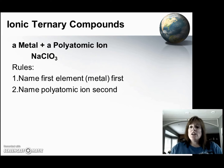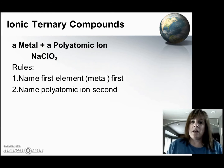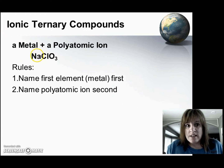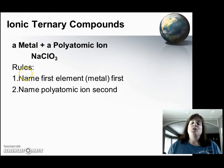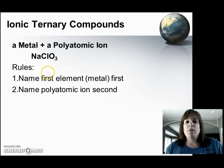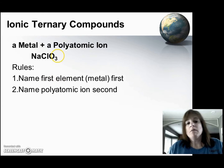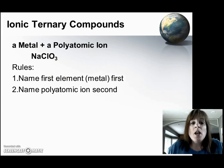Let's take a look at ternary compounds. In ternary compounds, we have a metal — the stuff on the left side of the periodic table — bound to a polyatomic ion, like this one right here. This is the element sodium, and this is the polyatomic ion chlorate. Our rules are very similar, except we don't have to worry about endings now. Rule number one: name the first element first, so sodium. Name the polyatomic ion second — this is chlorate. So this is sodium chlorate.